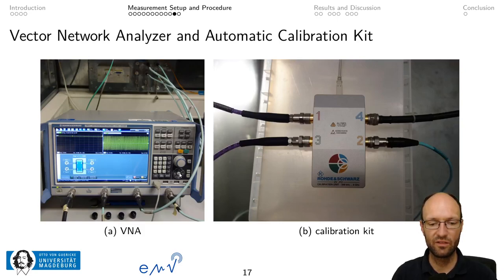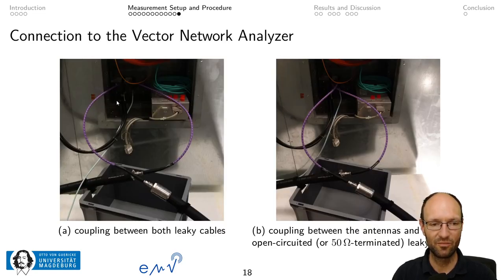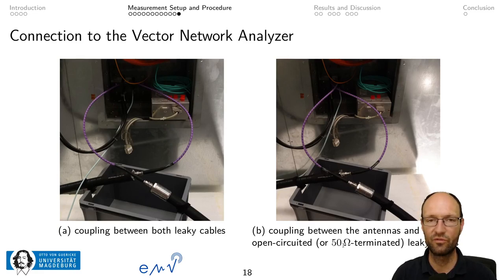This is the vector network analyzer used for the measurement — a Rohde & Schwarz ZNB8 going from 9 kHz up to 8.5 GHz. We used an automatic calibration kit for the unknown through, open, short, match (TOSM) calibration, which is very handy — doing this calibration manually at four ports would be extremely tedious. This automatic calibration kit is really very useful for this type of four-port measurement. Here are final pictures of the connections between the leaky cables and the measurement ports or feed-throughs, for configurations with both leaky cables and with cables terminated with 50 ohm or open-circuited.